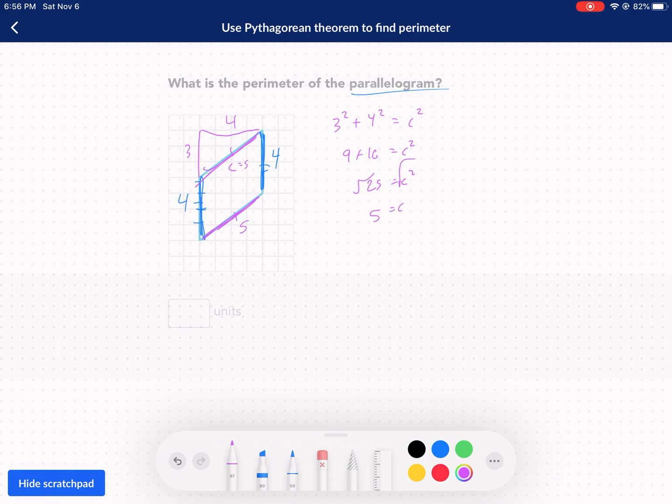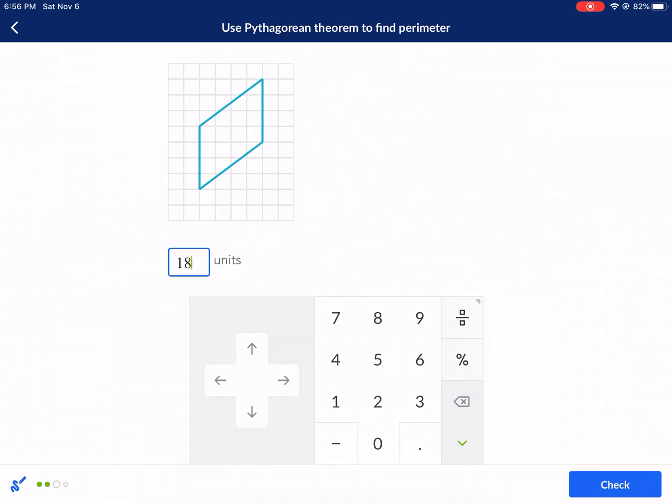So that equals five. That equals five. Now we just add them all up. Five plus five is 10 plus four, 14 plus four, 18. And we're good.